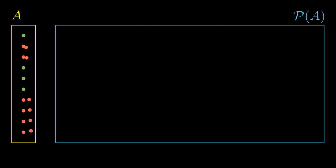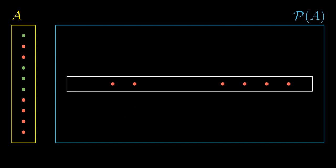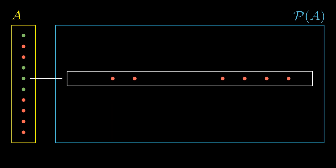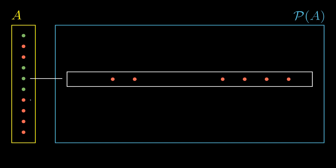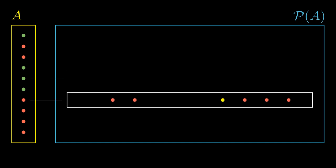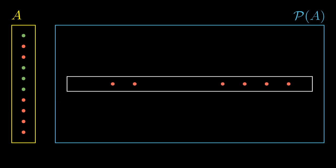Finally, we took the set of all the red elements. Such a set cannot be matched neither with a green element, it would be missing in the set, nor with a red element, otherwise it couldn't be in it. This way we have constructed a subset that cannot be matched with any element.